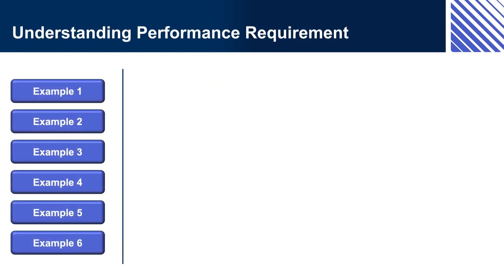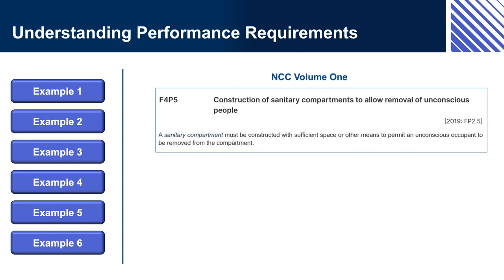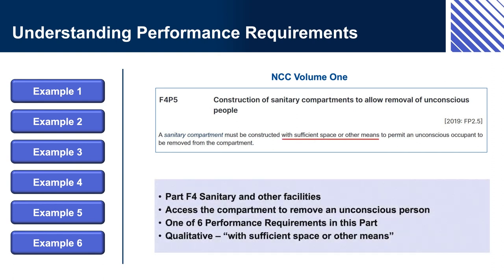Example 1 — NCC Volume 1, F4P5: Construction of Sanitary Compartments to Allow Removal of Unconscious People. Part F4 Sanitary and Other Facilities requires the ability to access any sanitary compartment to remove an unconscious person — one of six performance requirements in this part. This is qualitative, requiring 'sufficient space or other means.' For example, the compartment could be built so that the door can quickly be completely removed, in which case the space in the compartment would be less of an issue.